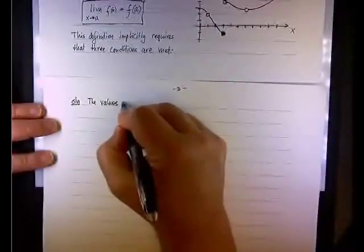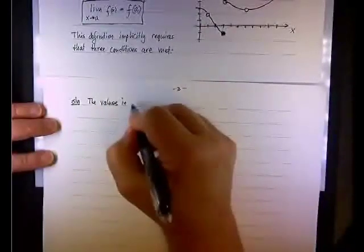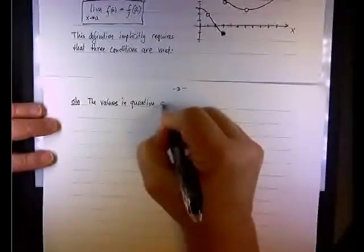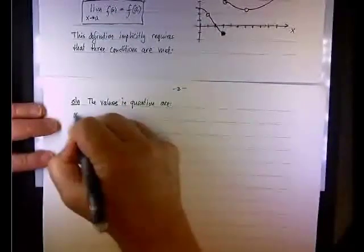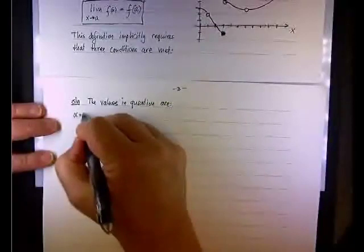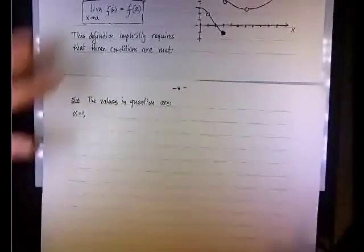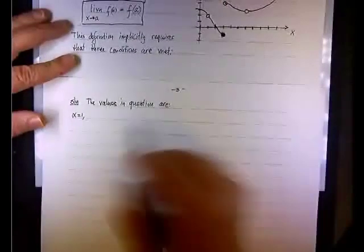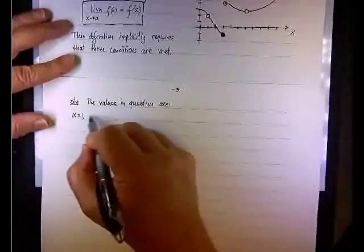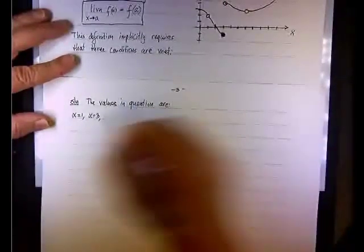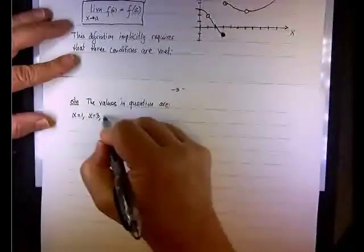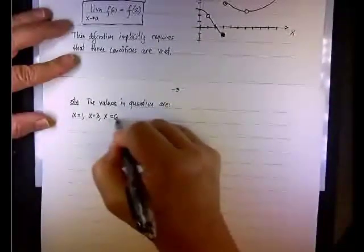So the values in question, the x values in question rather, are the following. Okay, you said 1, I heard that, right? Where else? 6. 6, okay. And 3 in between. So 1, 3, and 6.